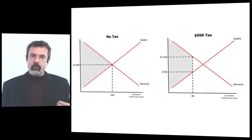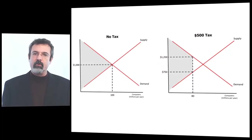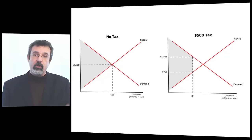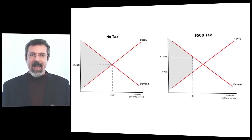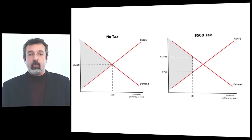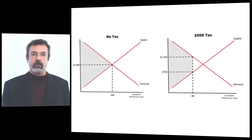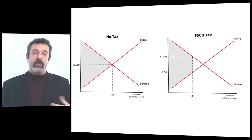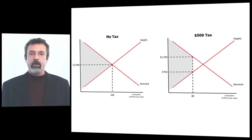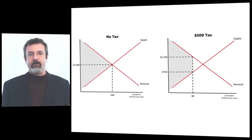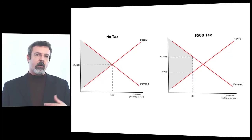The deadweight loss is an amount of happiness for the consumer and profit for the producer the market could have generated but failed to generate because of the distortionary effect of the tax. The tax caused consumers to act as if computers were more expensive than they really are, so they cut back on their consumption. It caused producers to act as if computers were less profitable than they really are, so they cut back on production. The result is fewer computers being bought and sold, and the market generates less benefit for society.